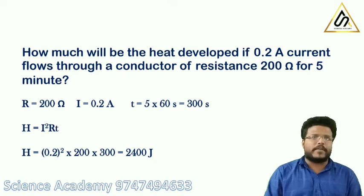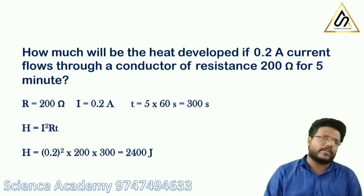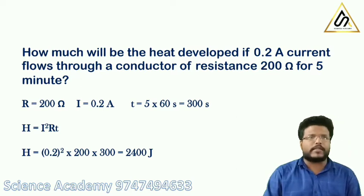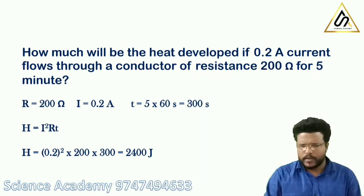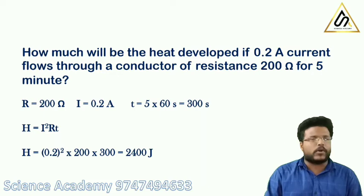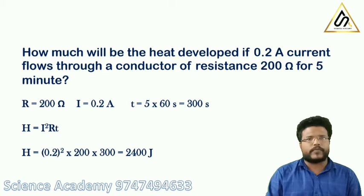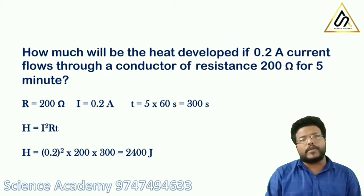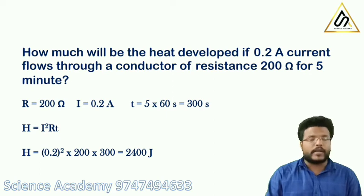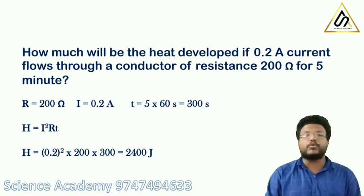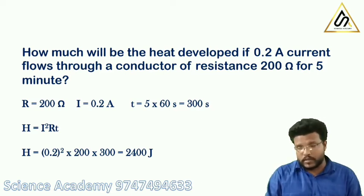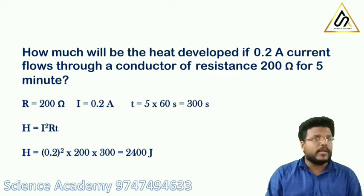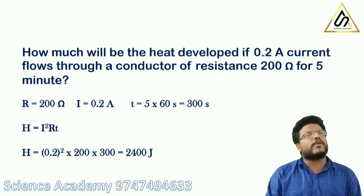The suitable equation for heat energy is H equals I squared R T. Using H equals I squared R T with I equals 0.2, R equals 200, and T equals 300 seconds, we calculate the heat developed.